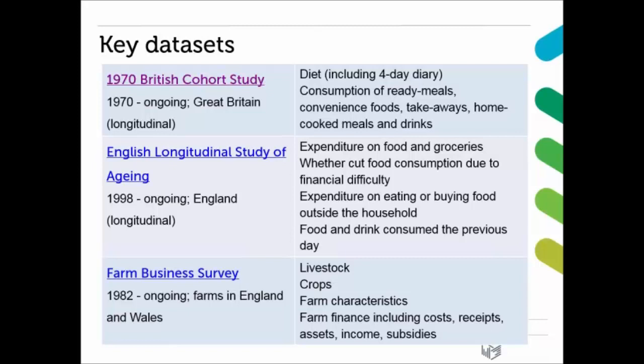A different type of data is held by the Farm and Business Survey. It started in 1982 and is continuing. It covers farms in England and Wales and has data about livestock, crops, farm characteristics, and farm finance, including cost receipts, assets, income, and subsidies. That's a really good dataset as well, depending on what topic you're researching.